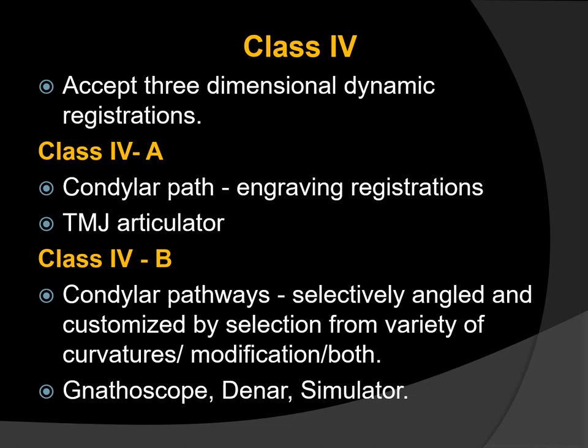Class 4 articulators accept three-dimensional dynamic registrations and are capable of accurately reproducing the condylar pathways for each patient, also allowing orientation of the cast using a face-bow transfer. Class 4A is where the condylar path is determined by engraving registrations produced by the patient and this path cannot be modified — example is the TMJ articulator. Class 4B is where the condylar paths can be selectively angled and customized by selecting from a variety of curvatures or modifications — examples are the Stott instrument, nathoscope, the Denar simulator, etc.